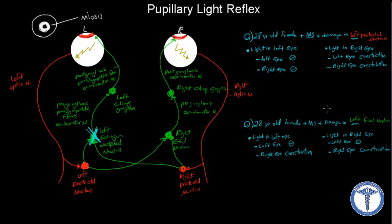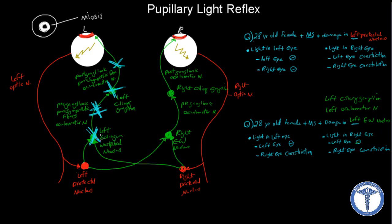Now, what if the question mentions left oculomotor nerve damage or left ciliary ganglion damage? This is pretty much saying the same thing as left Edinger-Westphal nucleus damage because they all present the same. So if we have damage in the oculomotor nerve — pre-ganglionic here or post-ganglionic here — or the left ciliary ganglion here, all of these are going to present exactly the same way. This is why I drew them in different colors: the left optic nerve and left pre-tectal nucleus are in red because they present the same; the Edinger-Westphal nucleus, both pre- and post-ganglionic oculomotor nerve, and the left ciliary ganglion are in green because they present the same.